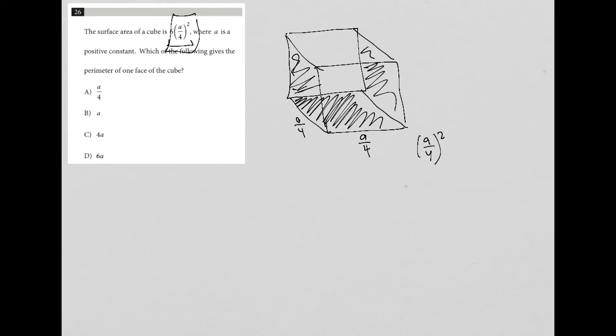Which of the following gives a perimeter of one face of the cube? Okay, perfect. So you see here where it's valuable to have drawn this, because if I'm looking for the perimeter, let's say, again, we focus on this bottom face of the cube.